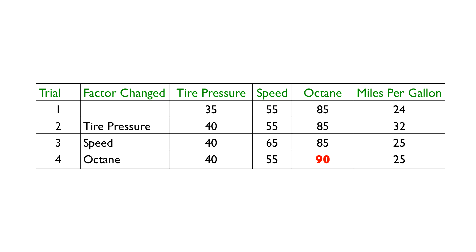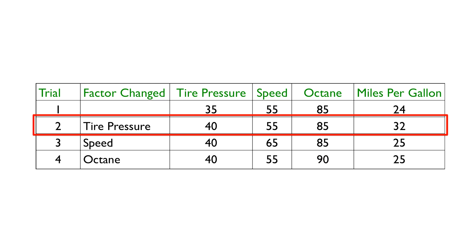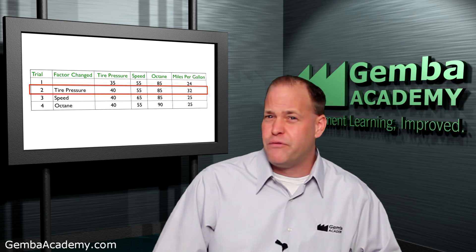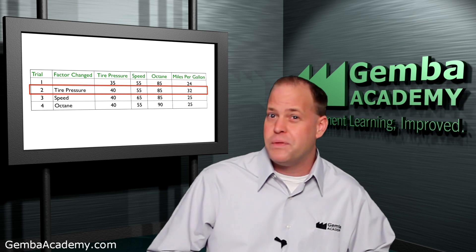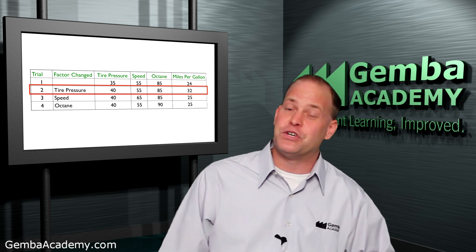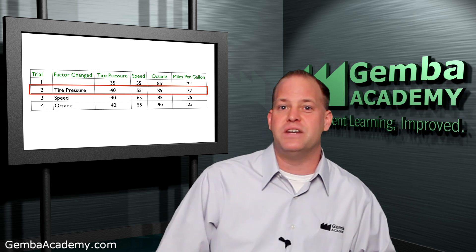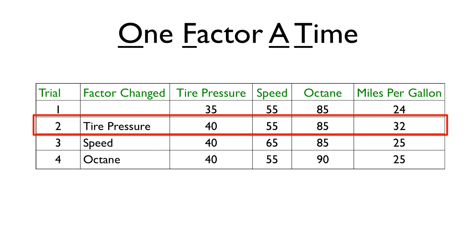As a result of this study, we conclude that to maximize miles per gallon, tire pressure should be 40 psi, we should drive 55 miles per hour, and use 85 octane since it's less expensive and performs the same as 90 octane gas. The question is: have we just performed a design of experiment and really determined the optimal settings? Unfortunately, the answer is no. What we actually did was known as a one factor at a time experiment, or OFAT. Sadly, many people believe this sort of experiment is indeed a DOE, when in actuality it's not.